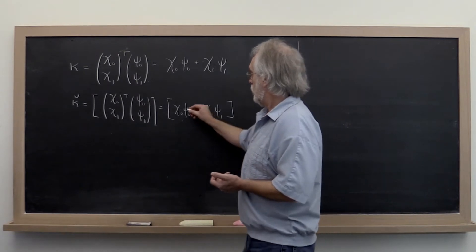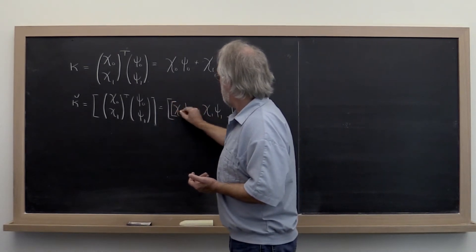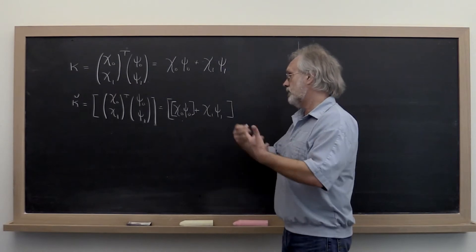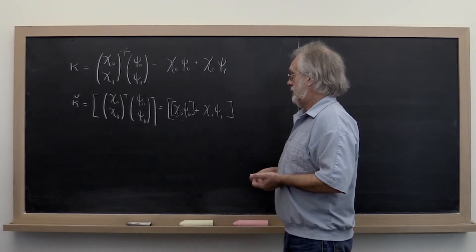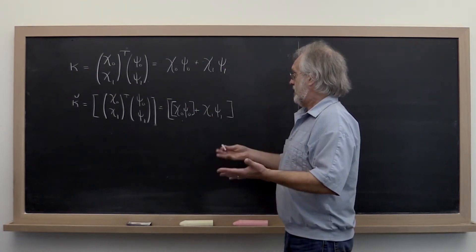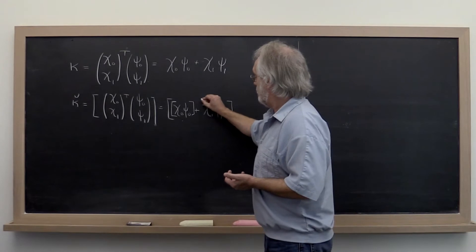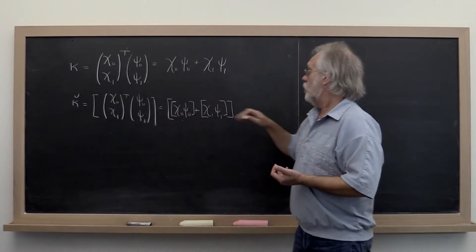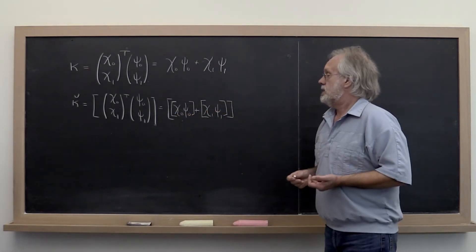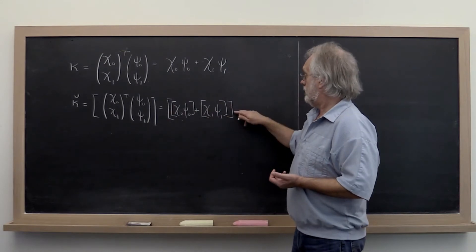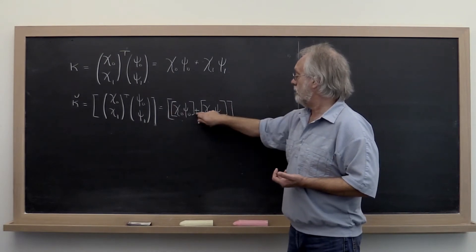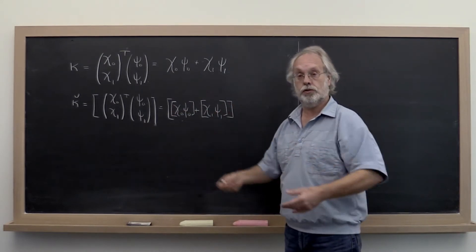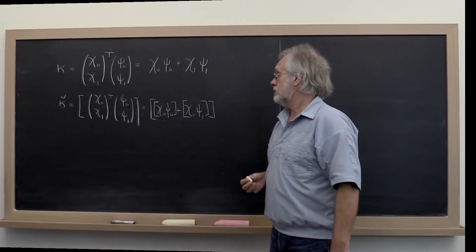Now recall that every time you do a sub-operation you're going to incur floating-point error. So what we really need to do is say this sub-operation is going to be computed and then stored, and therefore we end up with an error. The same thing for this sub-operation. And then finally we end up with a final operation — the addition — which then incurs yet another error.